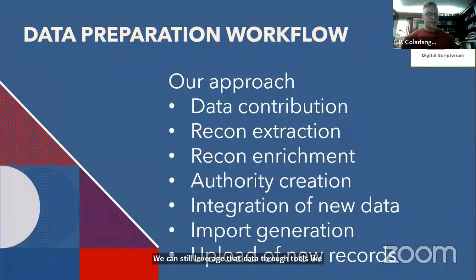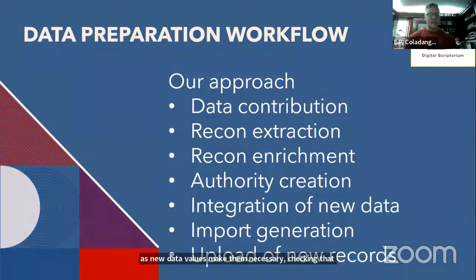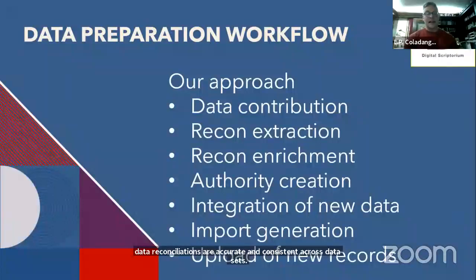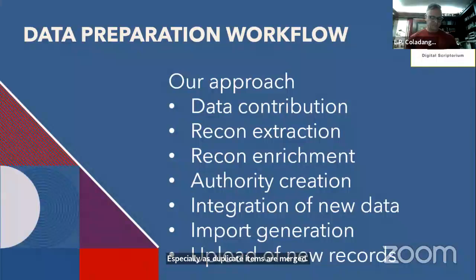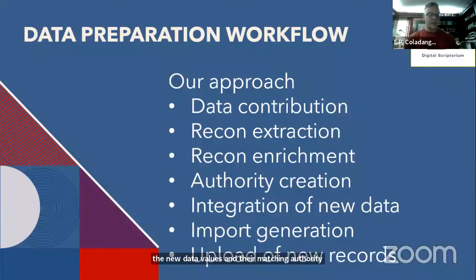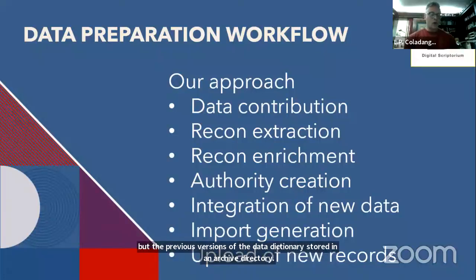Authority work for DS consists mainly of creating new authorities as new data values make them necessary, checking that data reconciliations are accurate and consistent across datasets, and occasionally checking for changes in labels and IDs. This occurs more frequently with Wikidata, which is a dynamic data environment, especially as duplicate items are merged and old labels and IDs are deprecated. After reconciliations are completed, the new data values and their matching authority information are integrated into the data dictionary, with previous versions stored in an archived directory. This allows us to restore an older version of the data if the new version becomes corrupted.